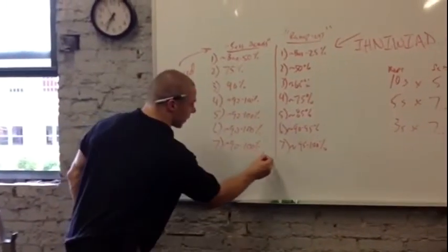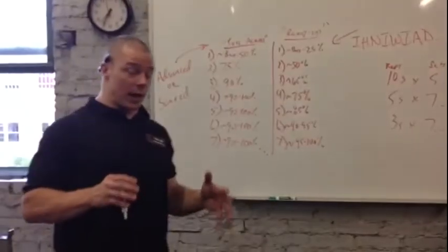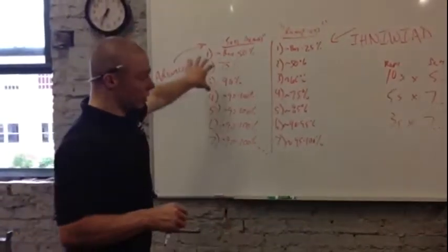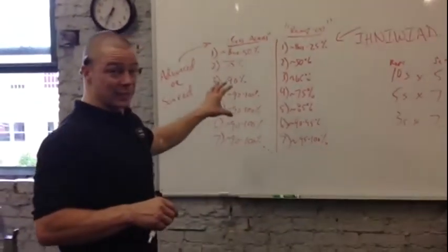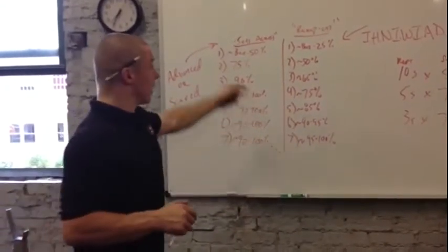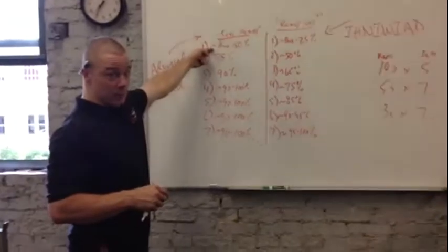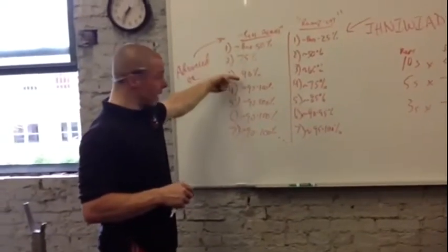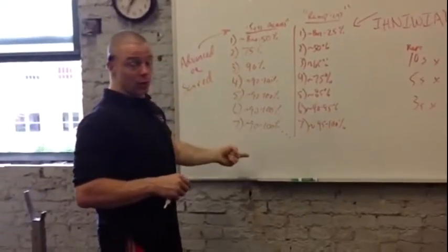Now, we could do more sets from there, sets eight, nine, and ten, depending on how advanced you are, how much time you have for sets. But this is sort of just a generic template to work up the sets across. So let's say you do 100 pounds for your three rep weight, that would be basically the bar slash 50 pounds, 75 pounds, 90 pounds, 90 to 100, and so on.